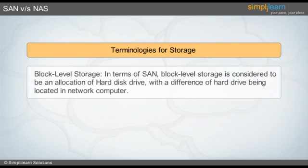The first terminology is block-level storage. Block-level storage is a type of storage allocation where a specified amount of space is being allotted in raw format. The term raw format refers to the space without a file system. We have already discussed file systems like NTFS, FAT, EXT, etc.